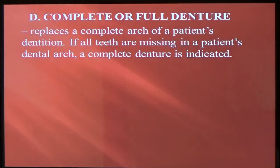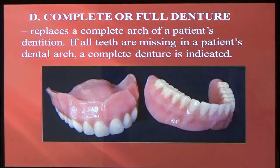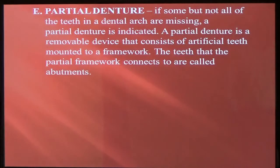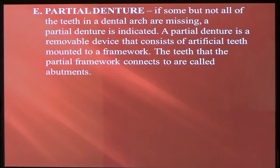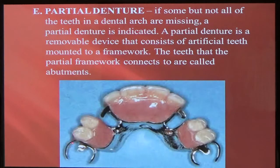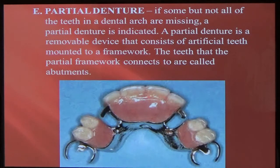A complete denture is when the patient is missing all of the dentition — so the upper teeth or lower teeth are missing. Complete means no natural teeth; it's resting on their gums. A partial denture is when there are some natural teeth remaining, so we're just replacing some of the missing dentition. It's anchored with clasps — you have abutments here, here, and here — and you're just replacing part of the teeth. That's why it's called a partial denture.